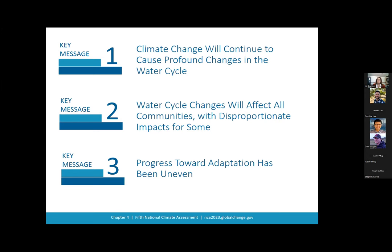Our first key message is about changes to the water cycle. Our second key message is about the impacts to human and ecological systems from the changes described in the previous key message. And our third key message is about adaptation — some of the tools, support, and successes, as well as some of the barriers and difficulties. We will dig into these three key messages in the presentation, and you can find the full text of each key message in the chapter.